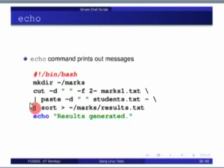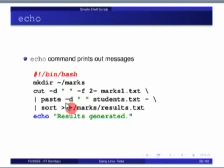The output of the script, instead of coming on the screen, can be redirected to a file using this redirect. The tilde (~) means home directory — the same as the shell variable $HOME. So tilde/marks/$1 means: a file named $1 inside the marks directory inside the home directory.